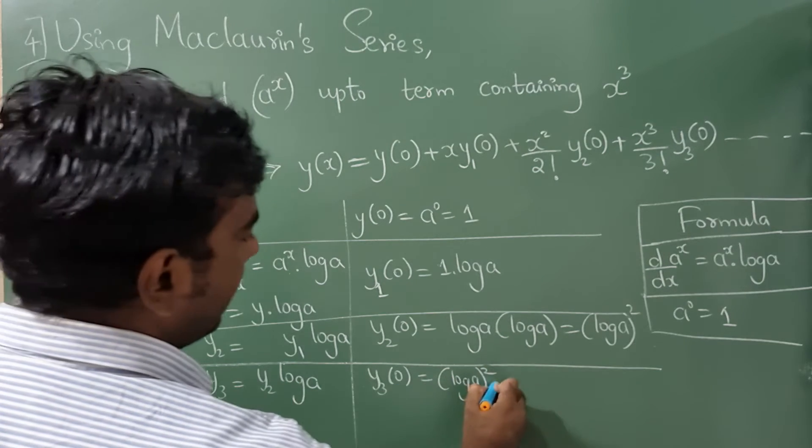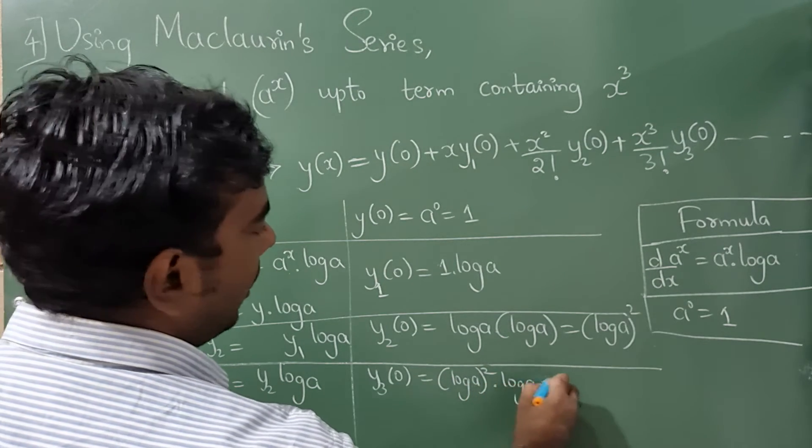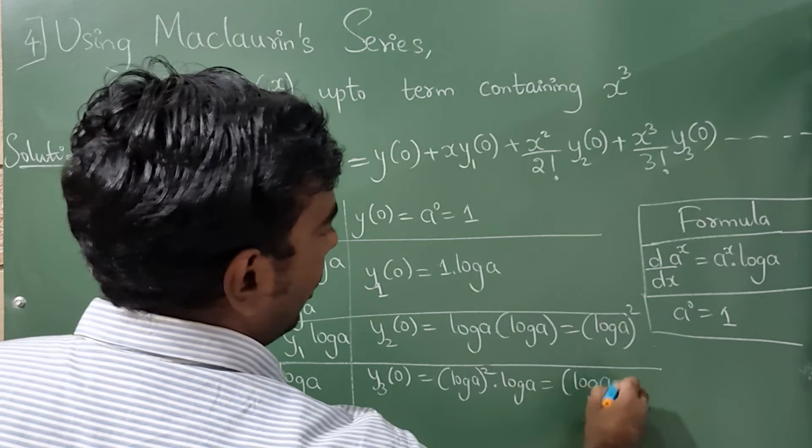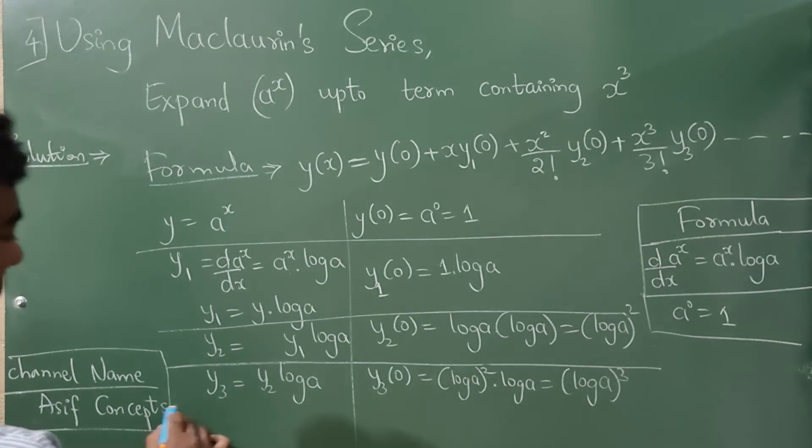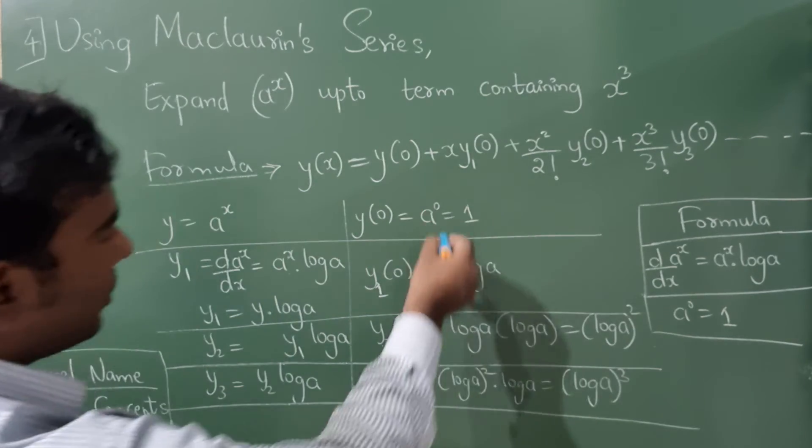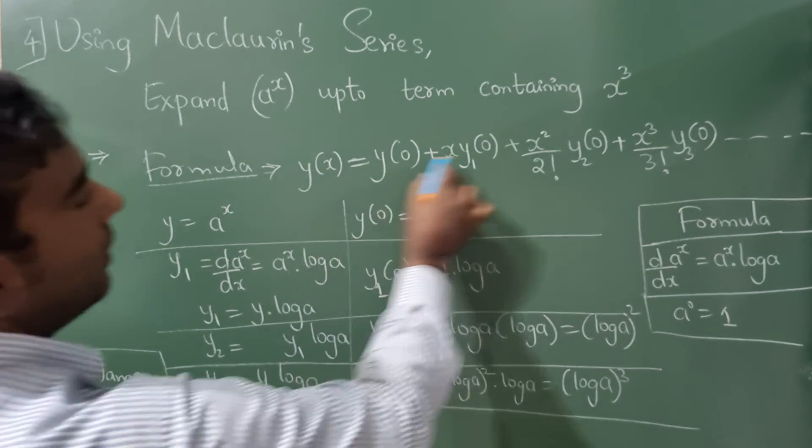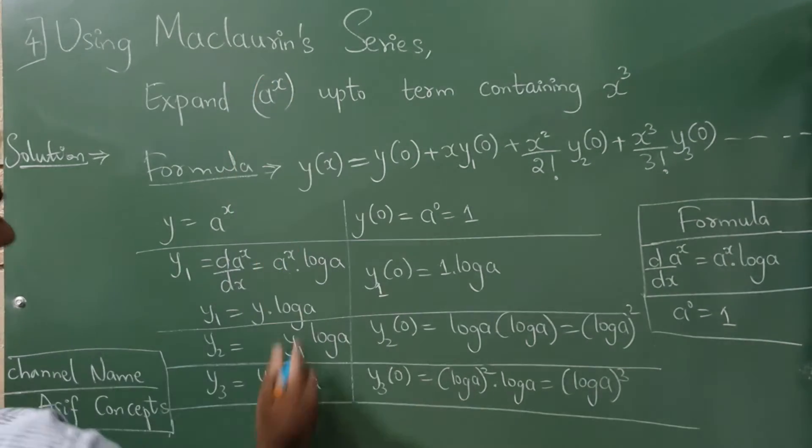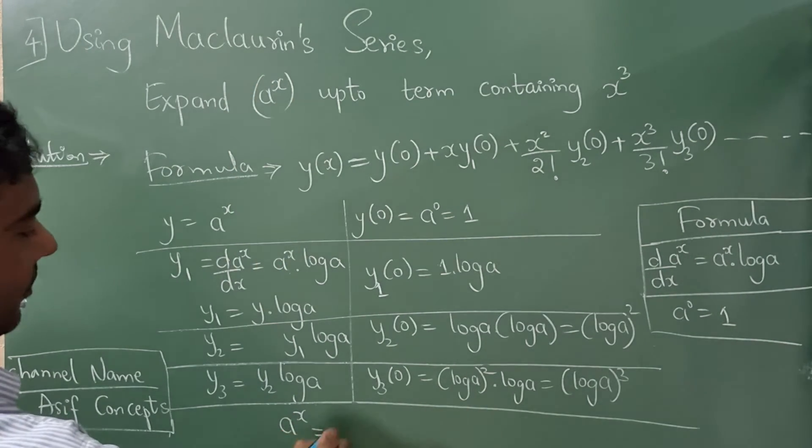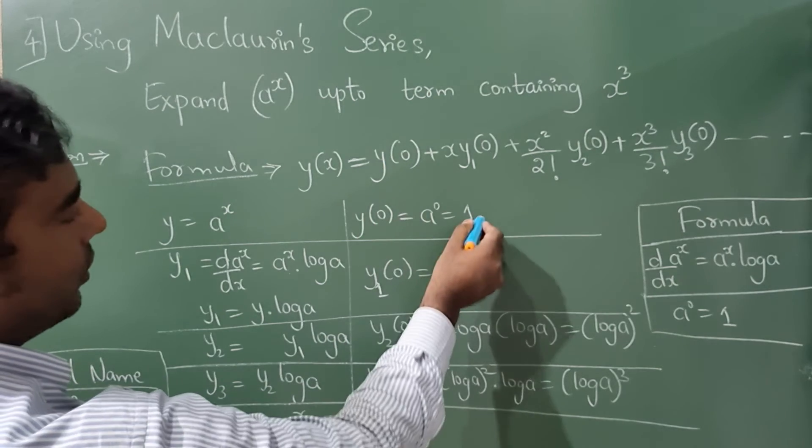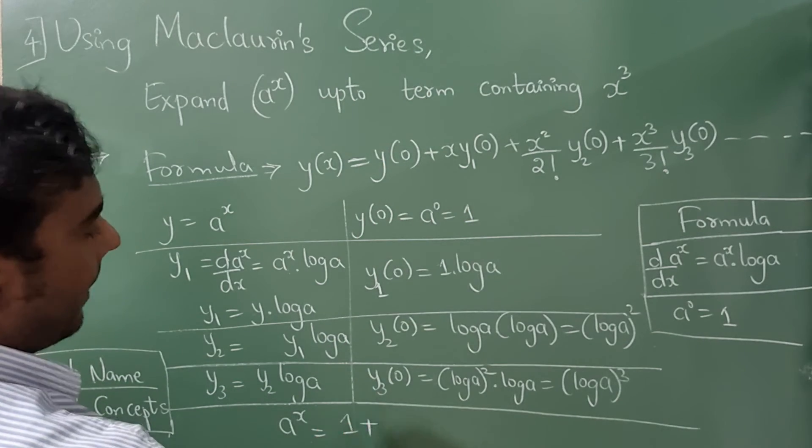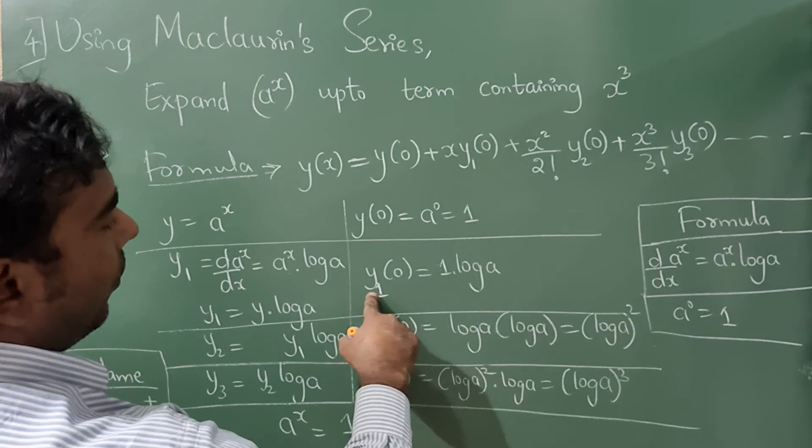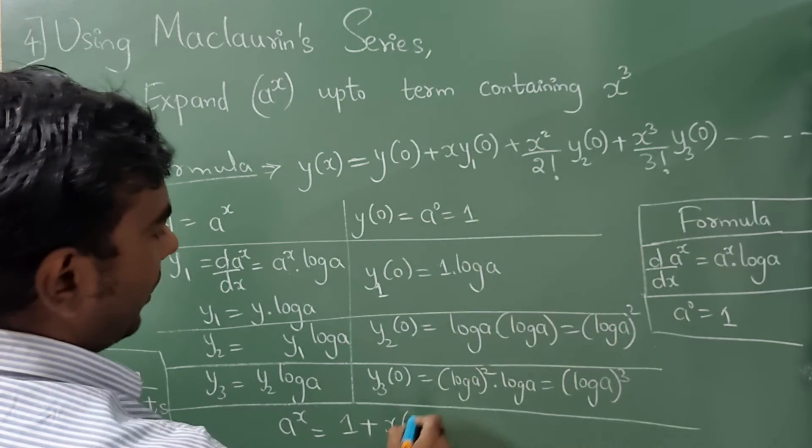And there is a log a here, so total how many log a? Whole cube. Now substituting all these in the formula. Formula y(x) means what? a raised to x. y(0) is 1 plus x, y₁(a₀) is log a.